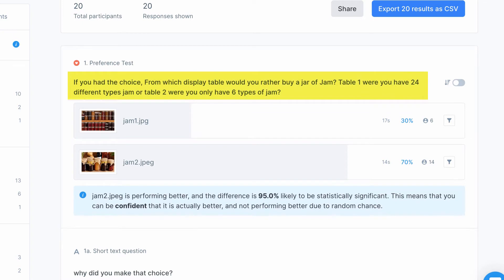So I sent a survey to 20 random people and asked them: if you had the choice, from which table would you rather buy a jar of jam? Table one with lots of options, or table two with fewer options? 70% of the testers actually chose the table with less options.